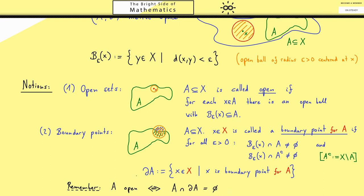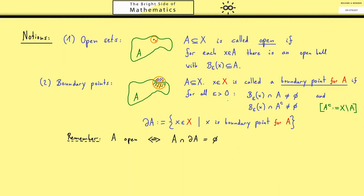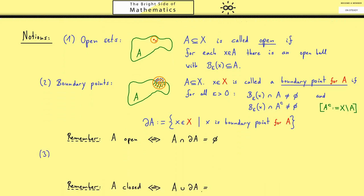When you see this then you immediately understand what a closed set should be. It should be a set where all the boundary points belong to this set. Using the same formula this reads A is closed if and only if A union with the boundary is A again. However that's not what one uses as the definition for closed sets. The definition is much simpler.